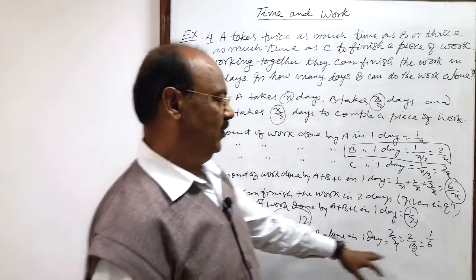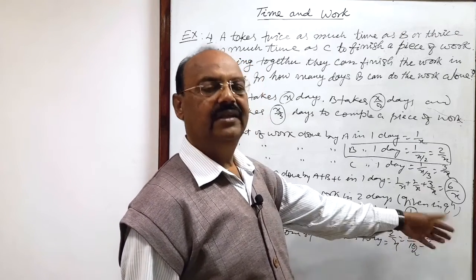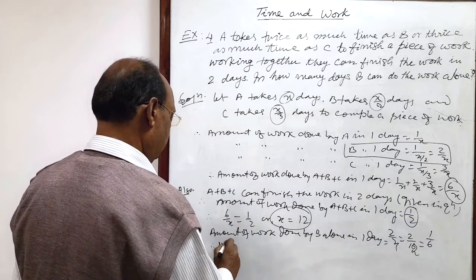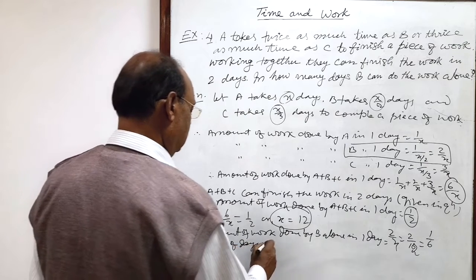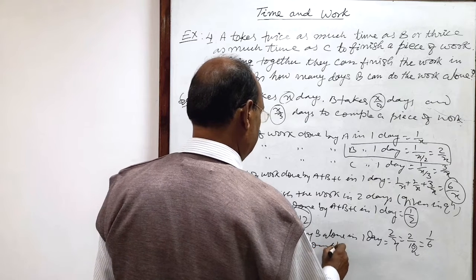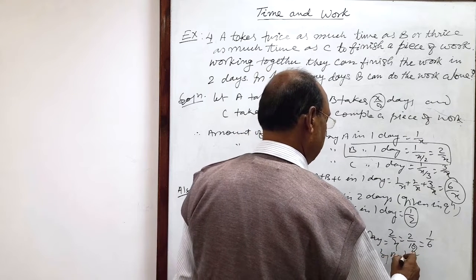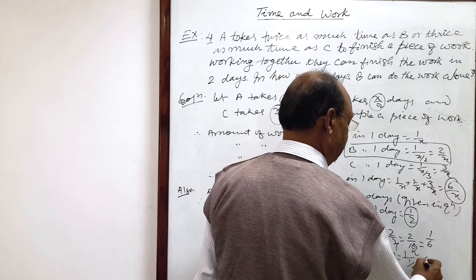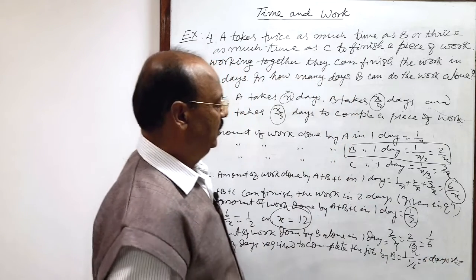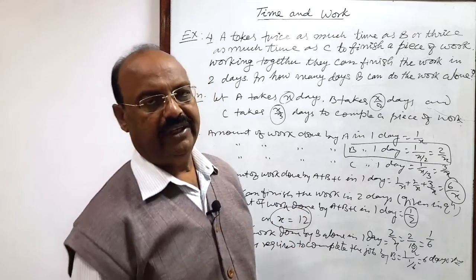So B's one-day work is one by six. The entire job can be done in the reciprocal of one by six, that is six days. Therefore, the number of days required for B to complete the job alone is one upon one by six, which equals six days. This is the answer. The question is a little tricky but not difficult — we can understand and solve it very easily.